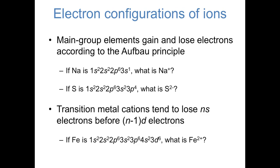The main exception comes in the case of transition metal cations. Transition metal cations tend to lose their s electrons before their d electrons, which contradicts the Aufbau principle. For iron 2 plus, it loses two electrons from its 4s orbital, giving 1s2, 2s2, 2p6, 3s2, 3p6, 3d6.